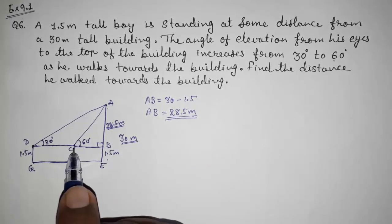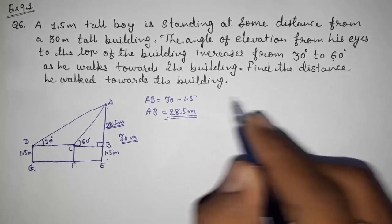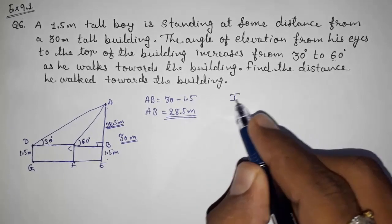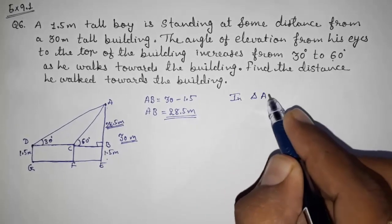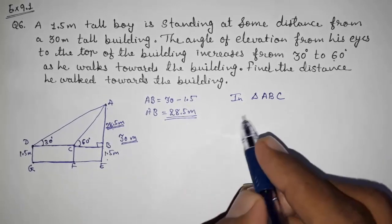So now you are having this. With the help of this you can find out BC. So let us find out. In triangle ABC, now you are having opposite, you want to find out adjacent.